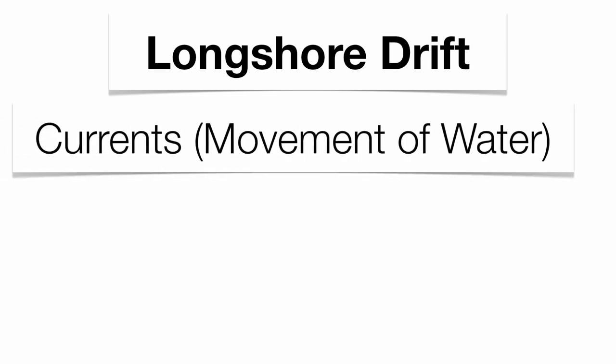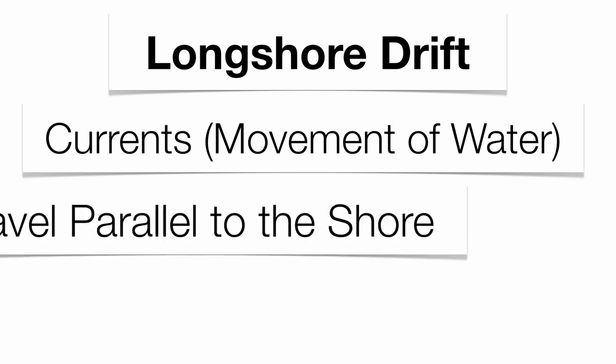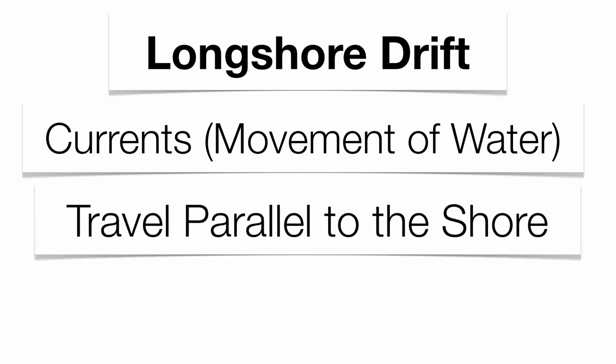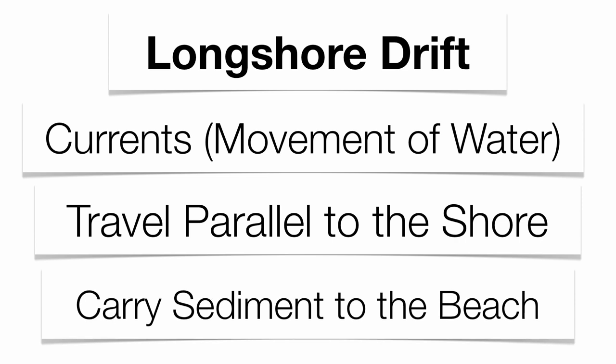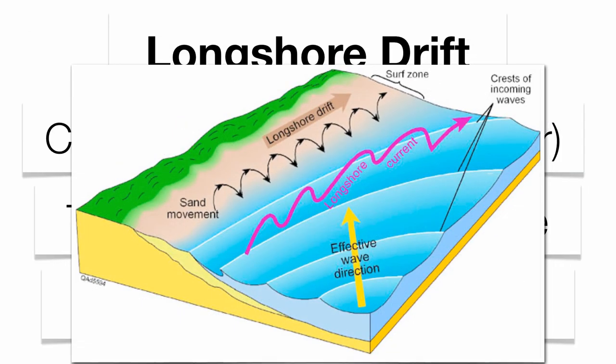Waves are going to carry sediments — that's what we call longshore drift or longshore currents. Longshore currents are going to carry sediment to the beaches. They're going to travel parallel to the shoreline and deposit sediment on the beach itself, which will basically make the beach get bigger. You can see how the longshore current carries sediment to the beach where it gets deposited.